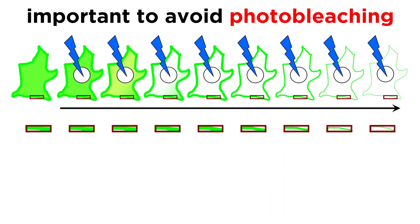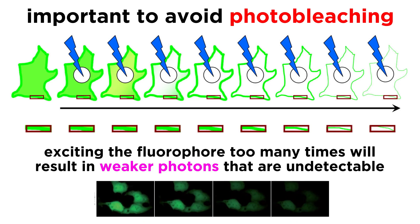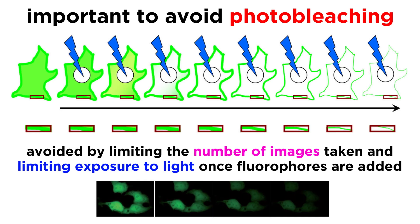When using any form of fluorescence microscopy, it is important to avoid something called photobleaching, which means exciting the fluorophore too many times, which causes the photons the molecule emits to be too weak to be detected by the microscope. Photobleaching can be avoided by limiting the amount of images taken of the specimen, as well as limiting the exposure of the specimen to light after the fluorophores are added.